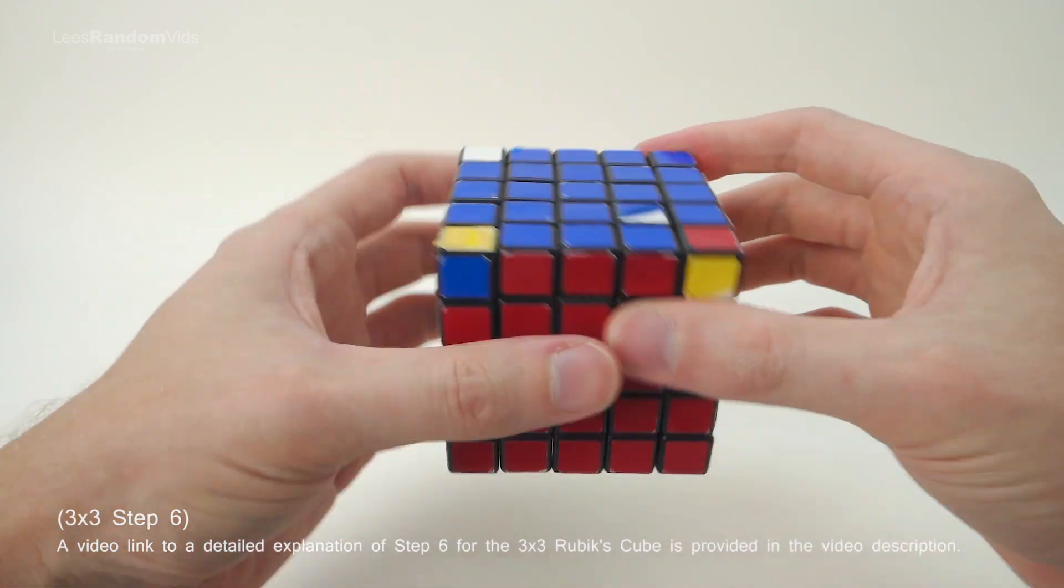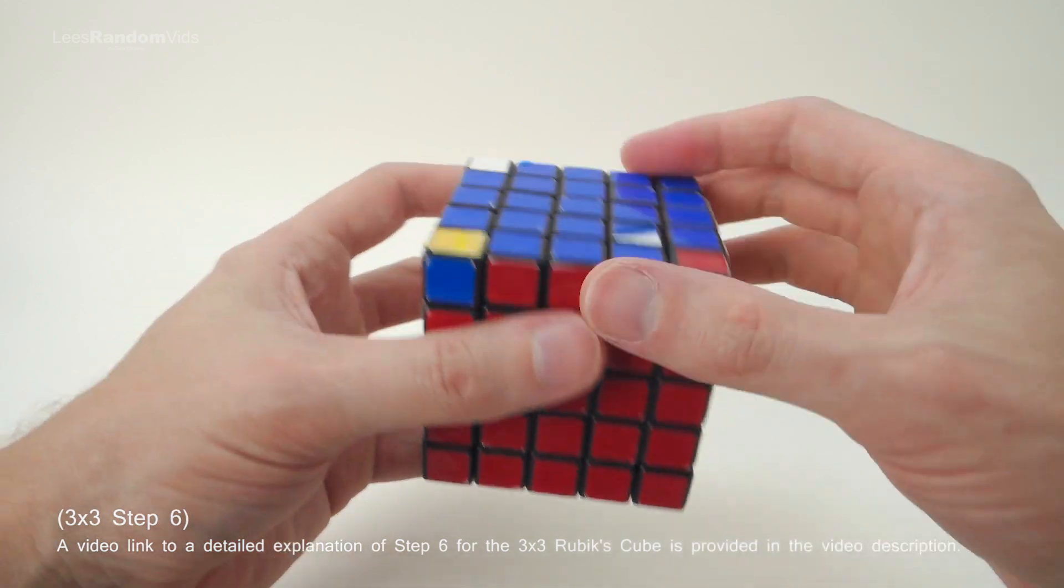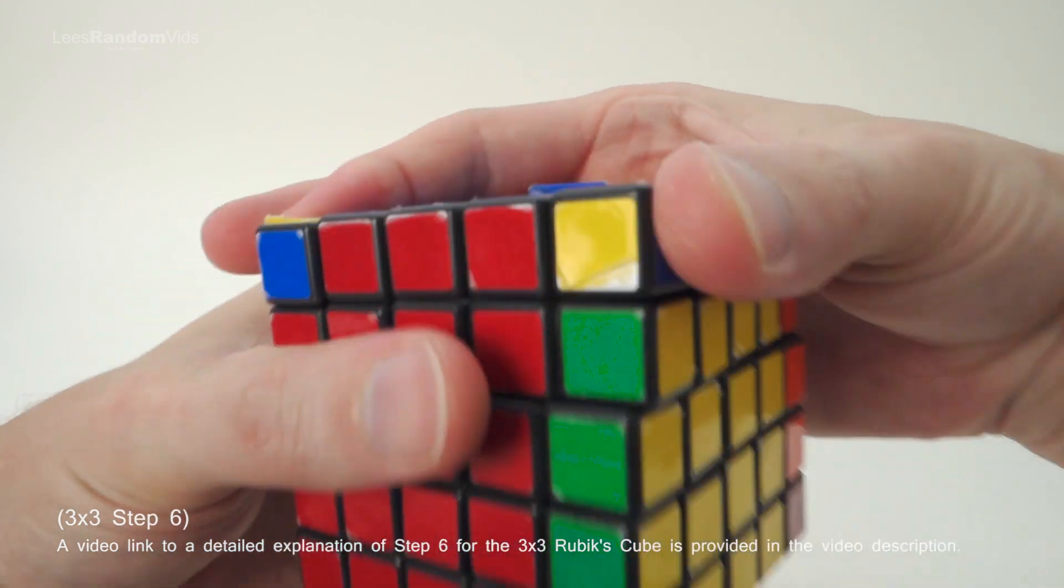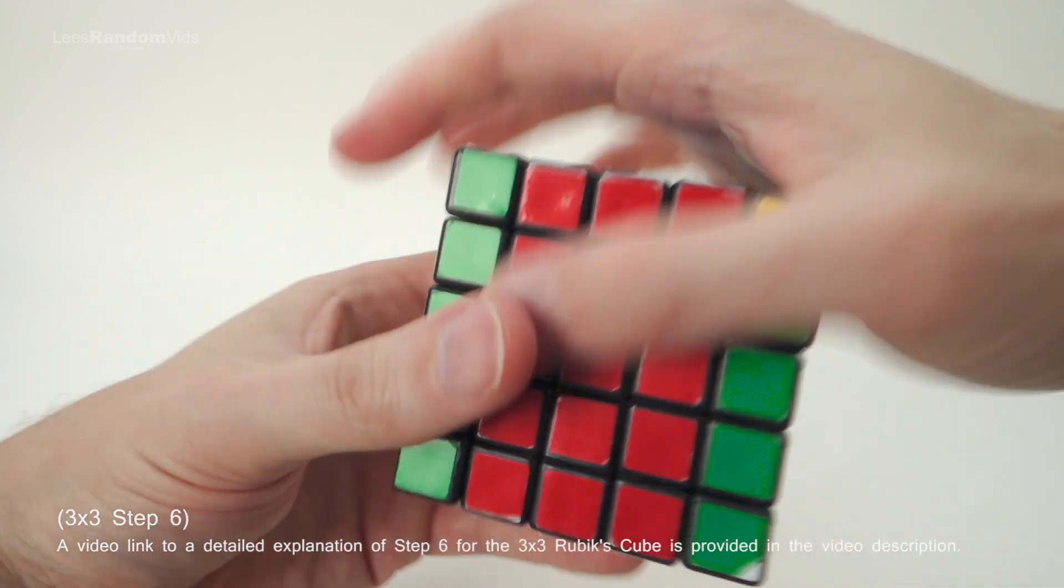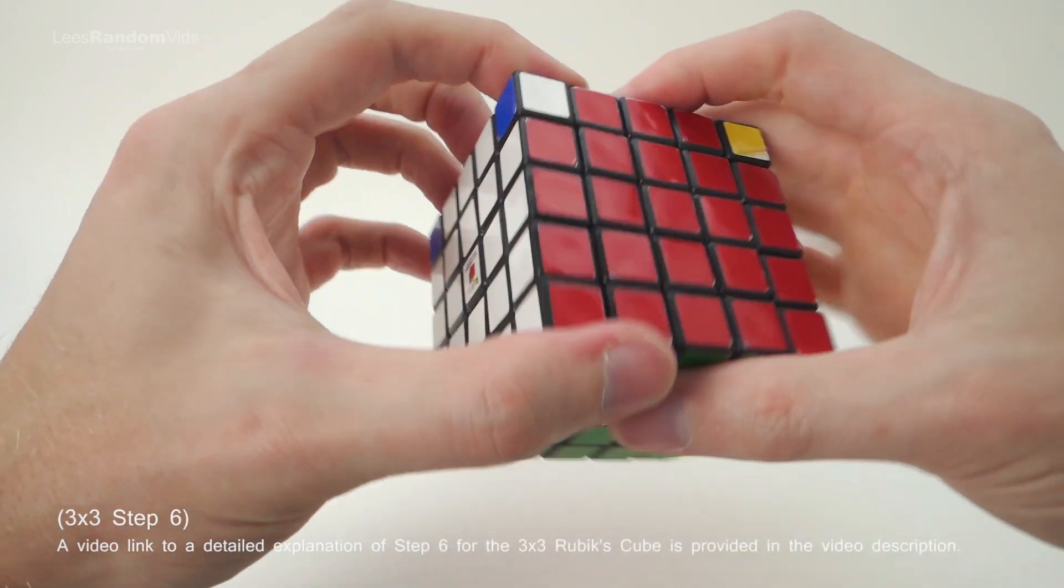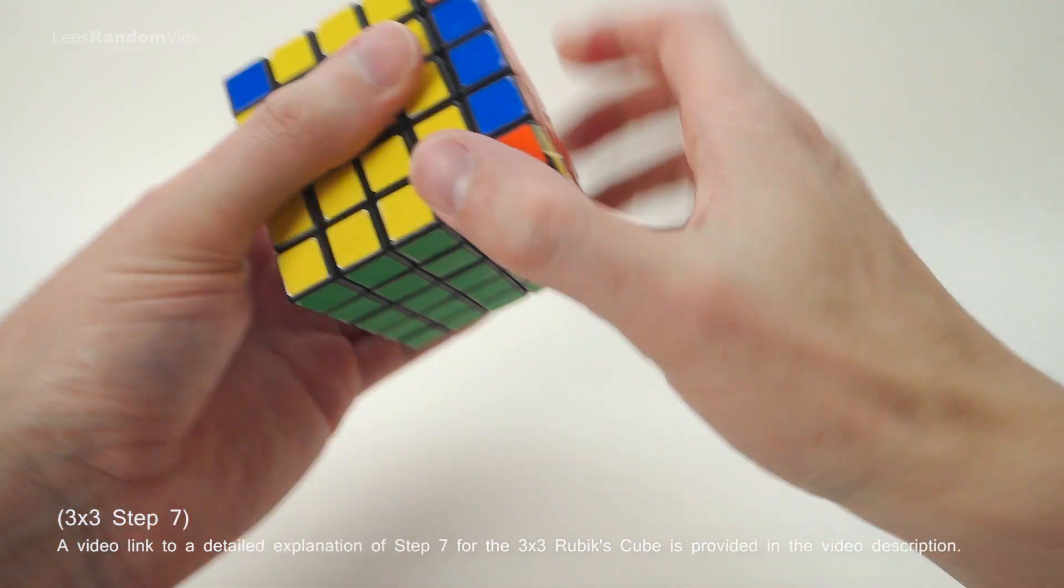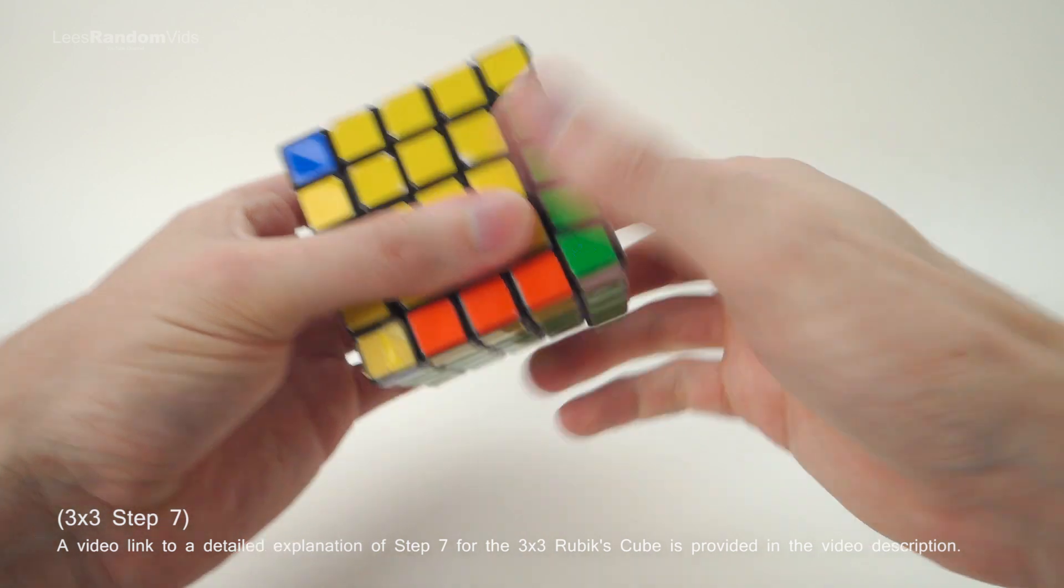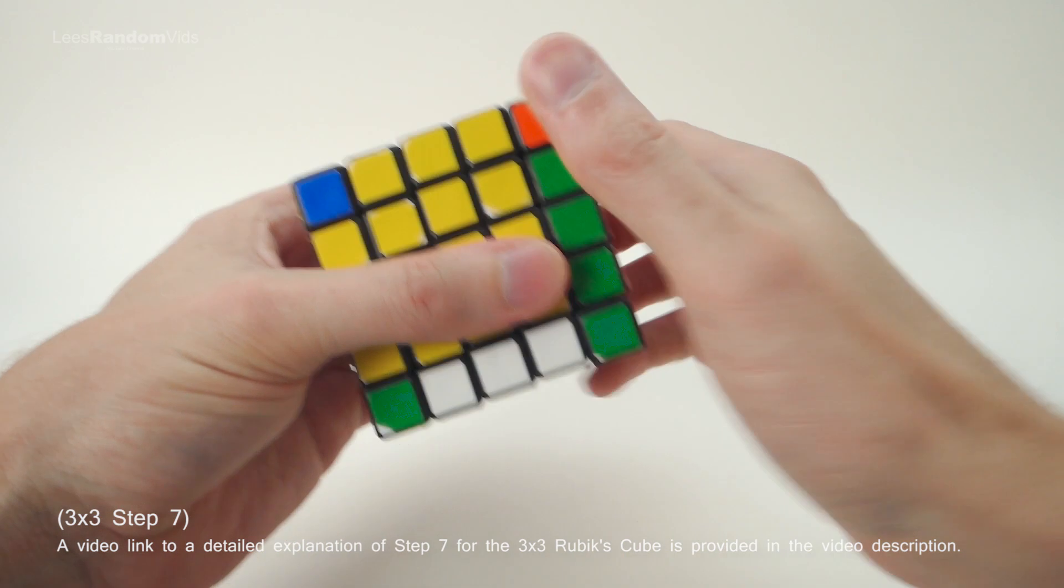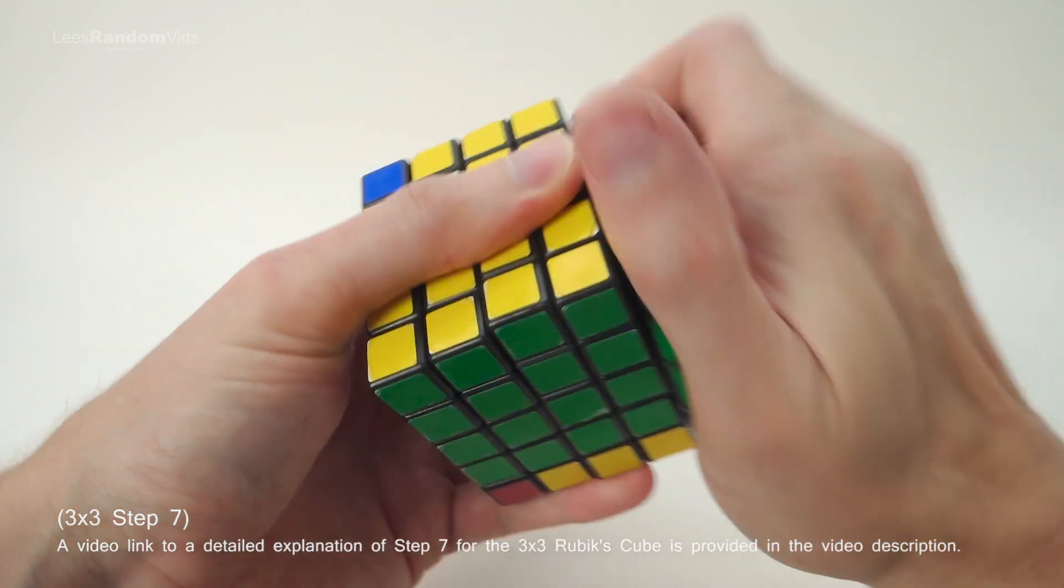The next step is the corners. You find one that's in position and then an algorithm with that one in the top right. This would be stage 6 on the 3x3. And then once you've got all the corners in position, it's just rotating the corners into position using stage 7 of the 3x3. This is the RIDI RD algorithm. Exactly the same as the 3x3.